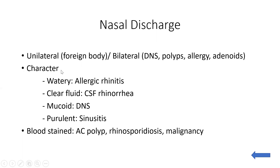We should also ask regarding the character of the discharge. If the discharge is watery, it is seen in allergic rhinitis. If the discharge is transparent and clear fluid-like, it can be CSF rhinorrhea, in which CSF leaks from the nose. If the discharge is mucoid, it is seen in deviated nasal septum. And if that discharge gets infected with pus, it is seen in sinusitis.